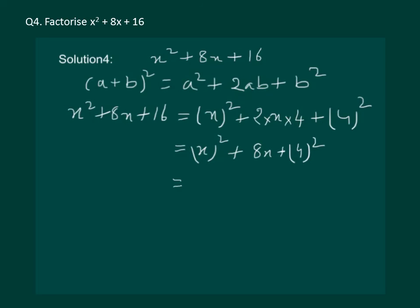Instead of a square plus 2ab plus b square, we can write a plus b whole square. So, our a is x and b is 4 whole square. And we get the answer that x plus 4 is the factor of x square plus 8x plus 16.